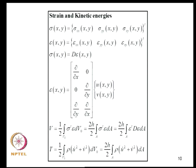To develop the finite element model we need expressions for strain energy and kinetic energy. We reorganize notation and write stress as a 3×1 vector with two normal stresses and one shear stress, and similarly strain as a 3×1 vector. The constitutive law is expressed through a 3×3 matrix D. The strain energy is sigma^T epsilon dV, and integrating over the area with thickness 2H gives epsilon^T D epsilon dA. The strain-displacement relations are simplified since W is zero.